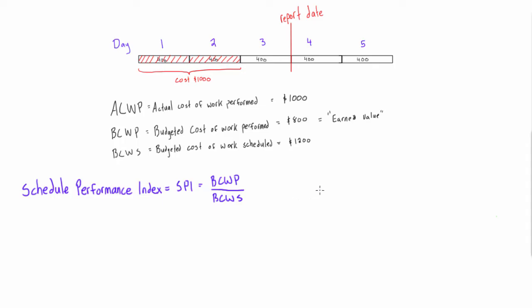But if we get an SPI that is less than 1, that's not a good thing and we're going to find that project is behind schedule.